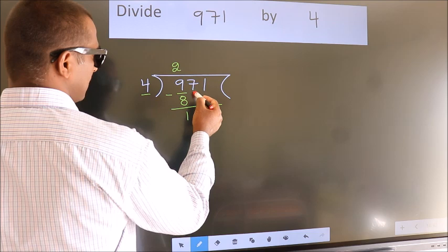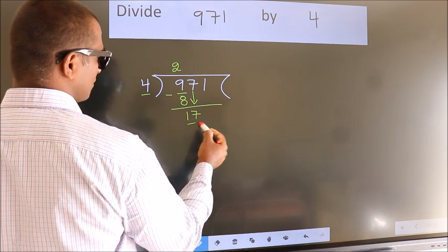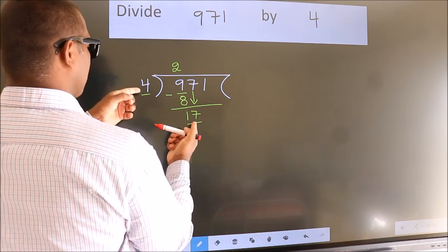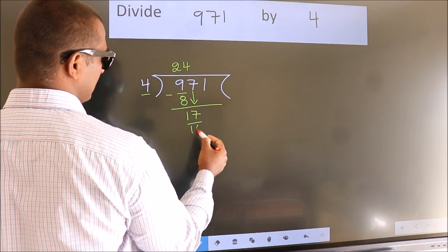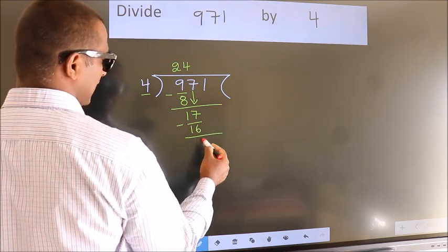After this, bring down the beside number. So, 7 down. So, 17. A number close to 17 in 4 table is 4 fours, 16. Now, we subtract. We get 1.